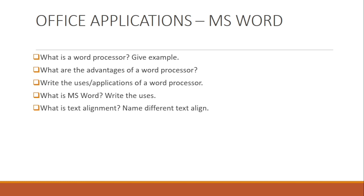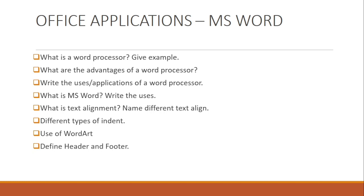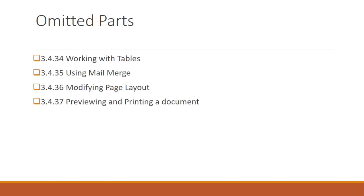Cover text alignment — the position of text — and the different alignment types: justify, center, left, and right, including shortcut keys for each. Also see the types of indent, uses of WordArt, header and footer — which may also be required for PowerPoint — and shortcut keys mainly for Thesaurus (Shift+F7). Note that topics from 'Working with Tables' onward in MS Word are not required and can be skipped for the examination.